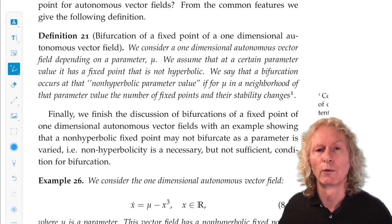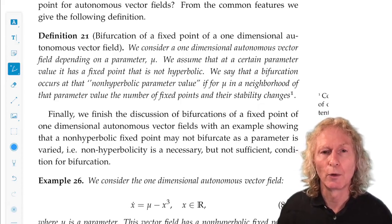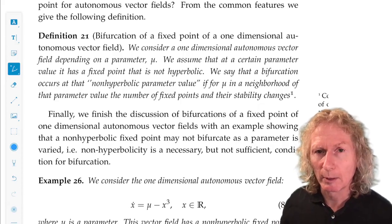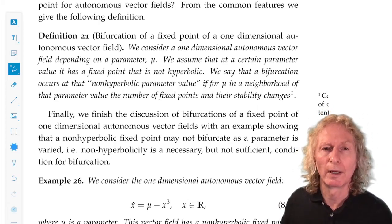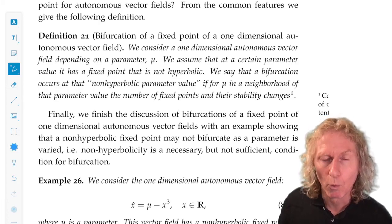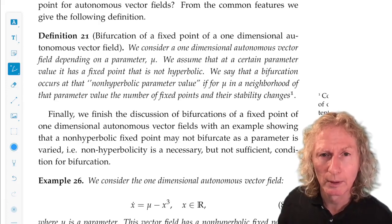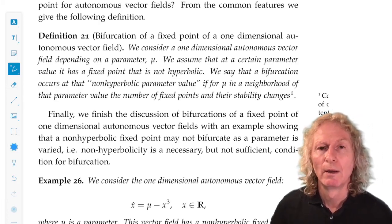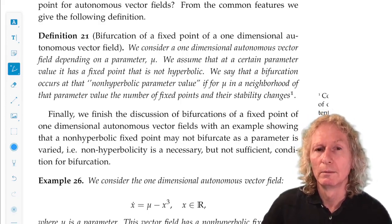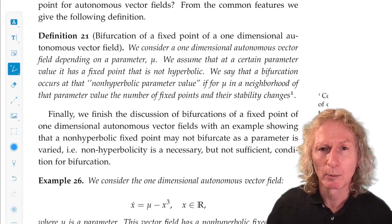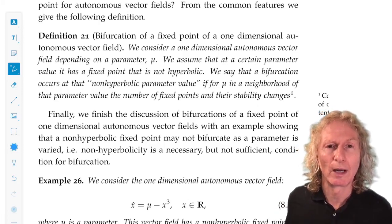So, for saddle node, we go from 0 to 1 at the non-hyperbolic point to 2. For transcritical, we have 2 to 1 at the non-hyperbolic point to 2. For pitchfork, we go from 1 to 1 at the non-hyperbolic point to 3 thereafter.